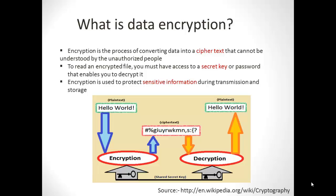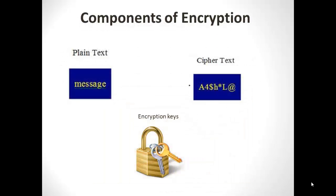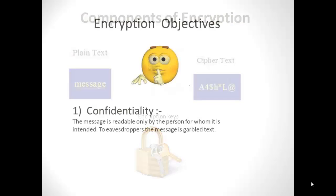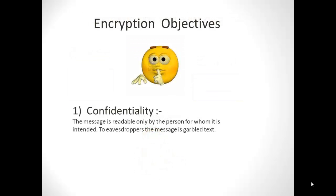Encryption is used to protect sensitive information during transmission and storage. There are basically three components of encryption: number one is the plain text, which is the actual data; number two is the ciphertext, which is the garbage characters after encryption; and number three is the encryption keys, which are used for locking or unlocking the plain text.